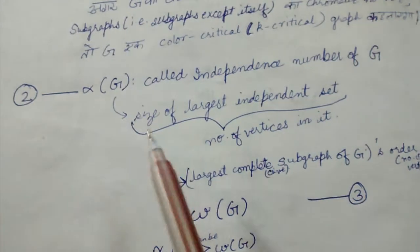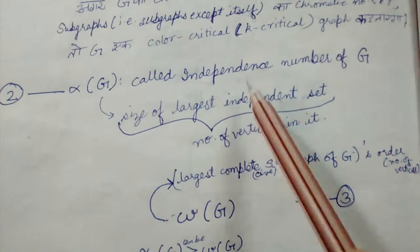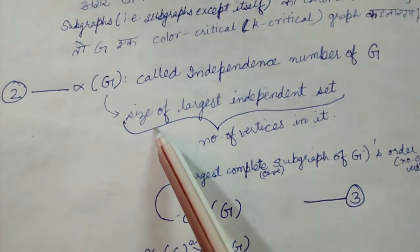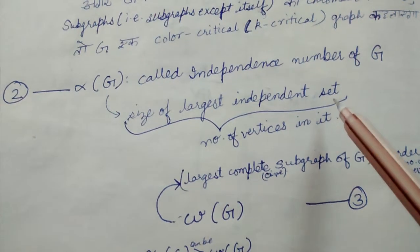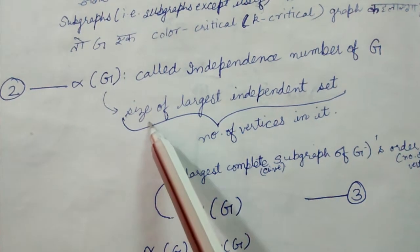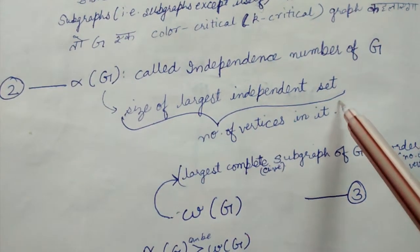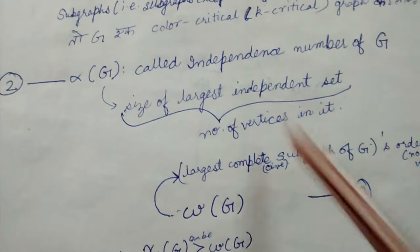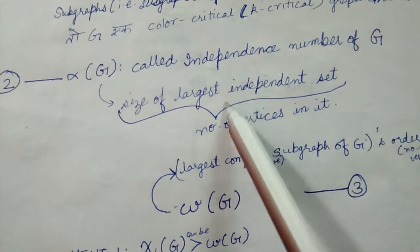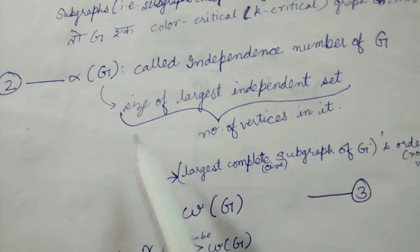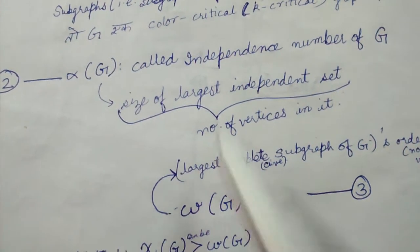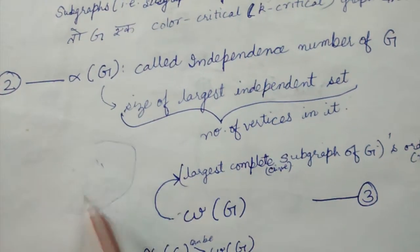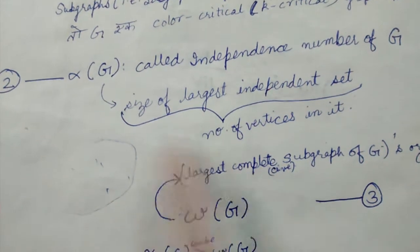The next notation is α(G), called the independence number of G. The independence number is the size of the largest independent set, meaning the number of vertices in the largest independent set. An independent set is a set where no two vertices are neighbors — no two vertices have an edge between them.